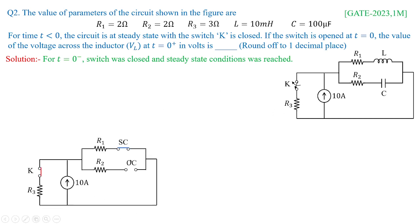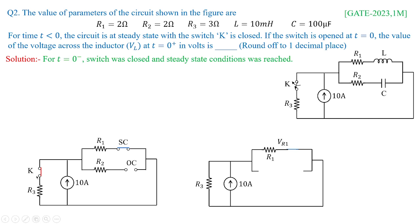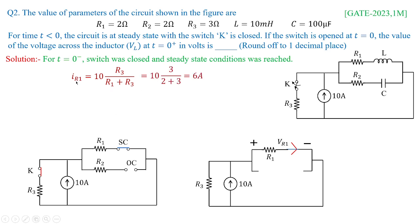In this circuit, the inductor is shorted and the capacitor is open-circuited. The switch K is now replaced, giving R3 in parallel with the 10 ampere current source, while R2 becomes open-circuited. R1 is present and its current IR1 is calculated using the current division rule: IR1 equals 10 amperes multiplied by R3 divided by the sum R1 plus R3, giving a value of 6 amperes.